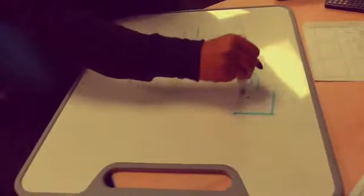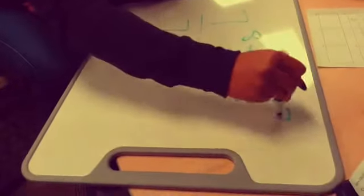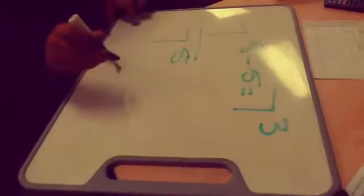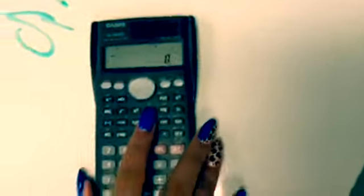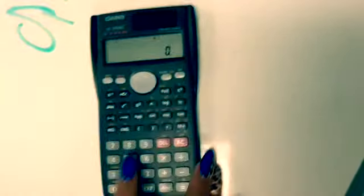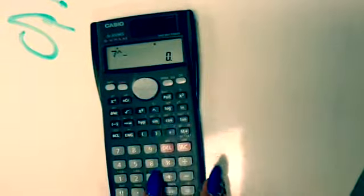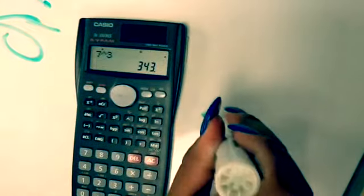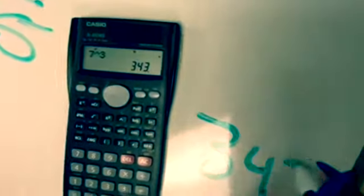And then 7 to the 3. So this is an exponent. So you do 7 to the exponent of 3, and it equals 343.